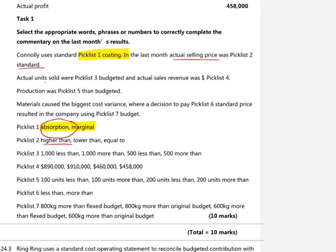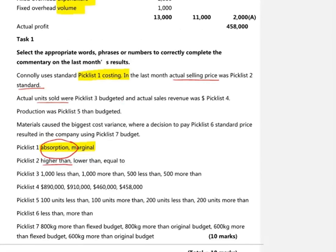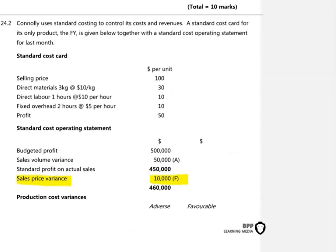The third thing we're asked for is to look at whether units sold were higher or lower than budgeted, and by how many units. Let's look at the sales volume variance, which in this case is $50,000 adverse. The volume variance would have been calculated by looking at the difference between the units budgeted to sell and the units actually sold, multiplied by the standard profit per unit. Given the standard profit per unit is $50, we can see we're looking at a difference of 1,000 units. As that's an adverse variance, it means we must have sold less than we planned to.